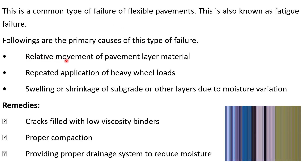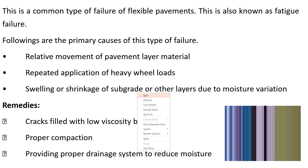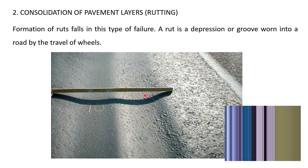Alligator cracking is mainly related to the relative movement of pavement layers — the sub-base and base course layers are settling over one another in adjacent parts. Causes include: relative movement of layers, repeated application of heavy wheel loads, and swelling and shrinkage of subgrade due to moisture movement. Remedies include: filling cracks with low-viscosity binder, proper compaction, and proper drainage.